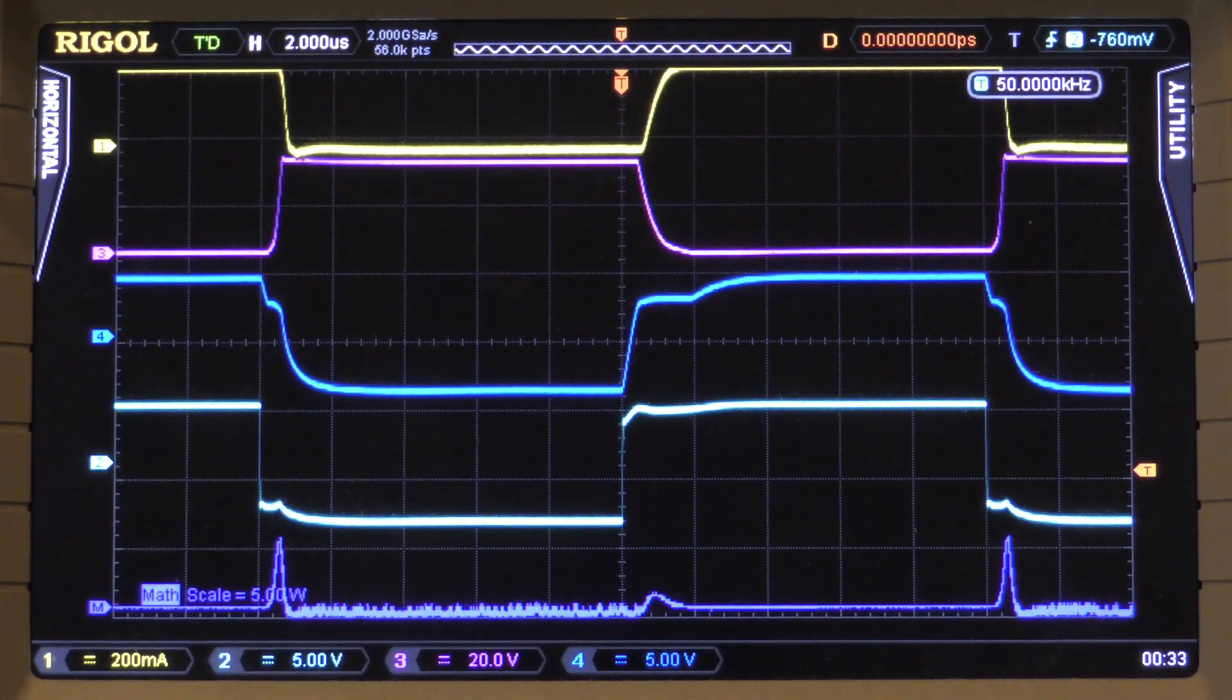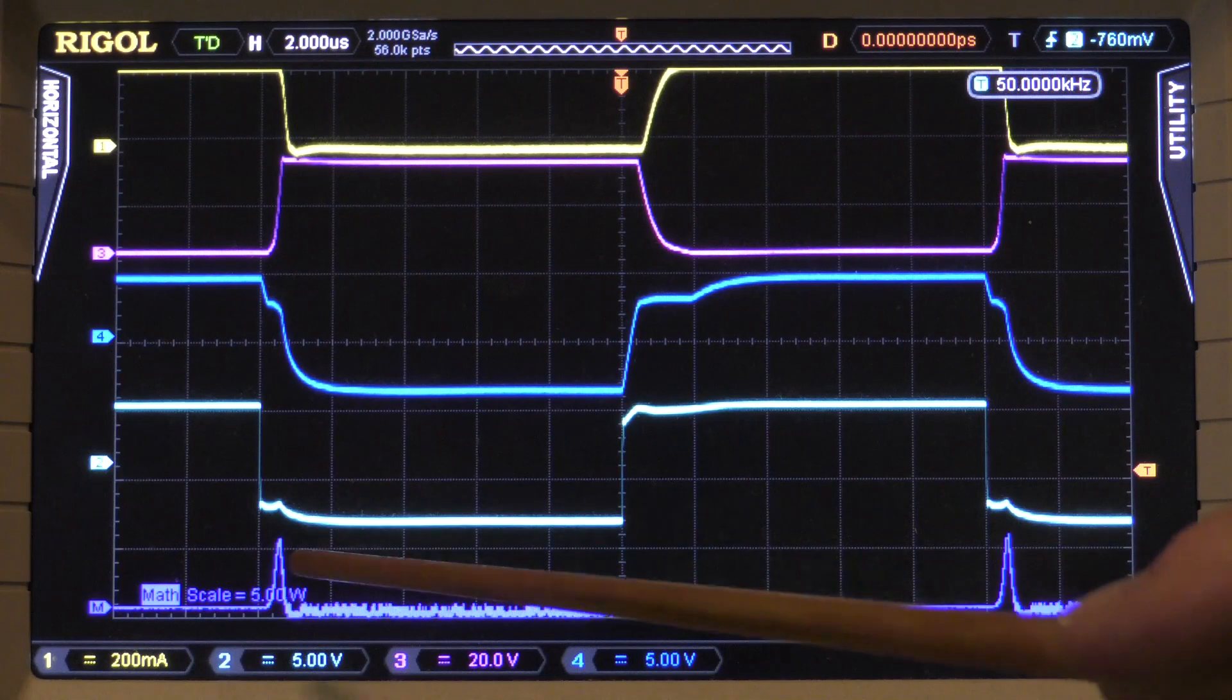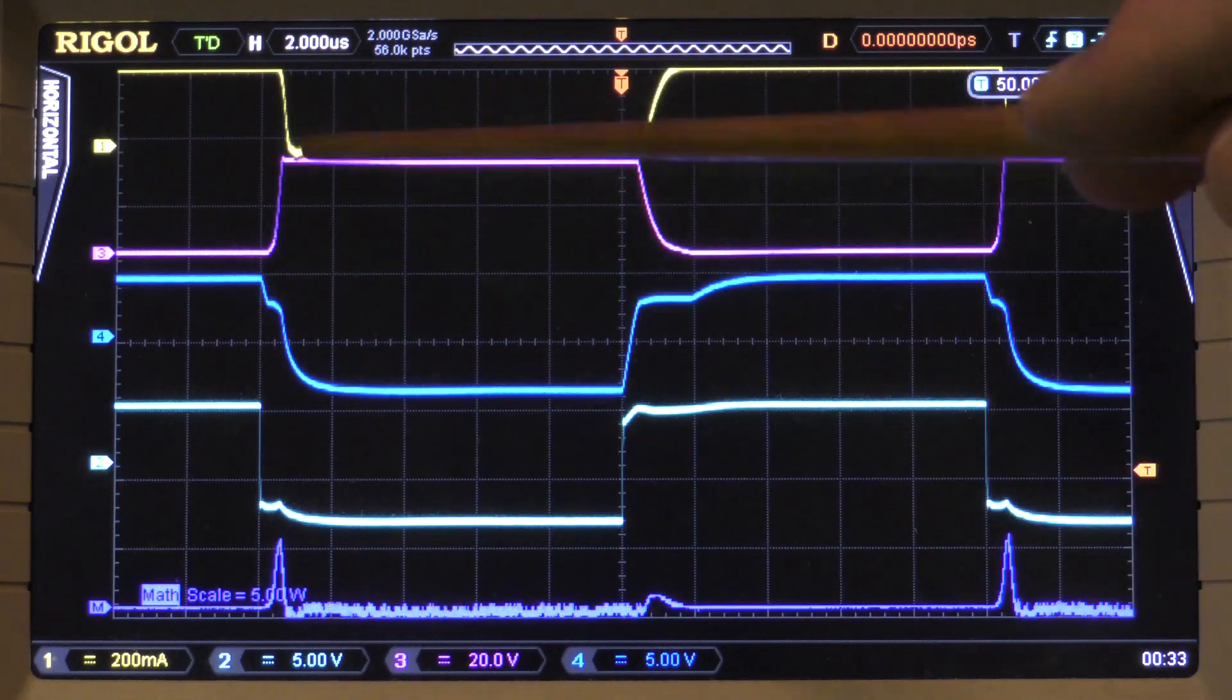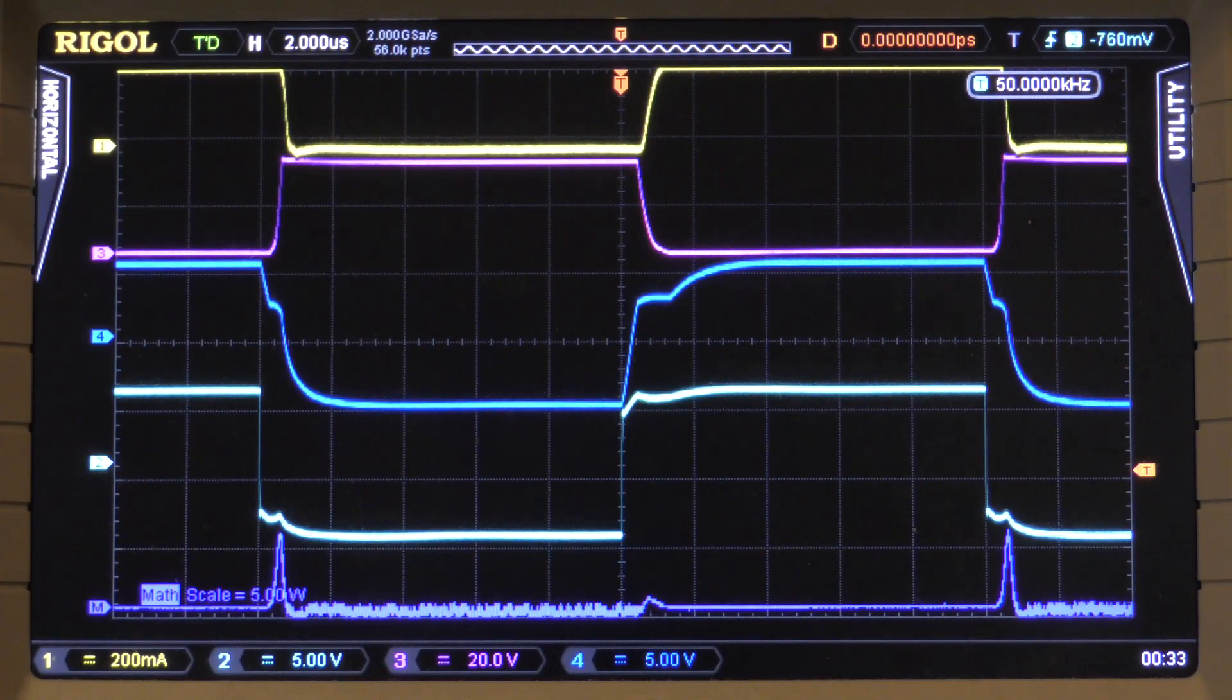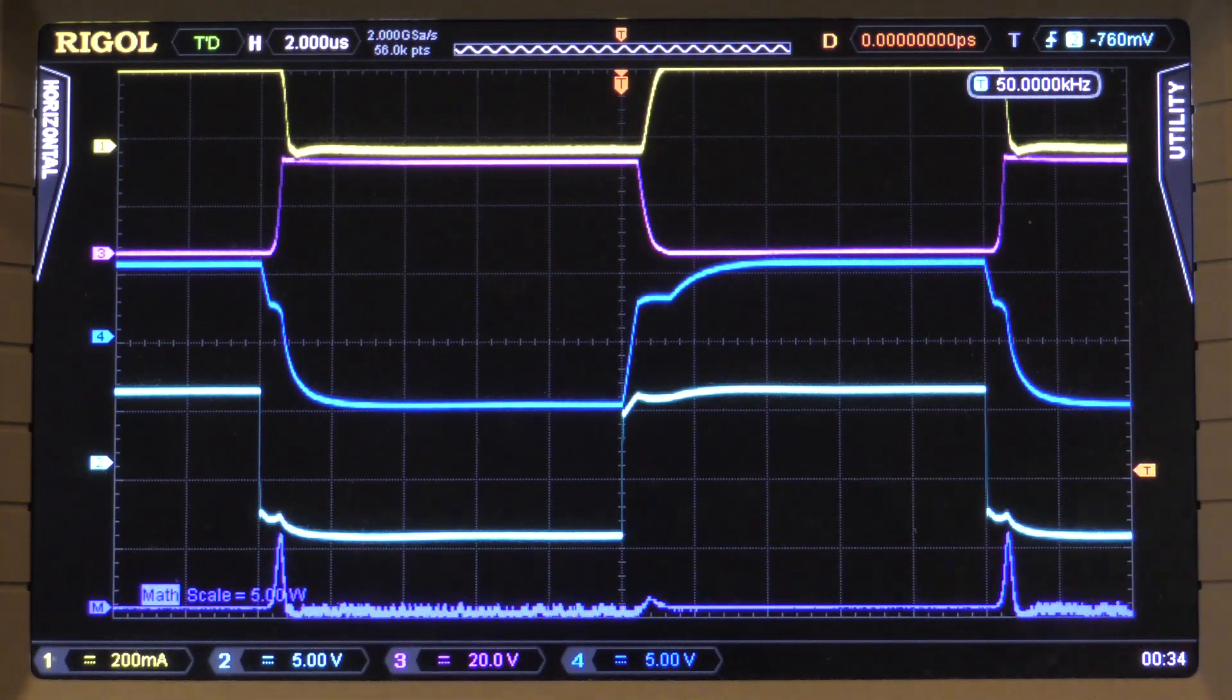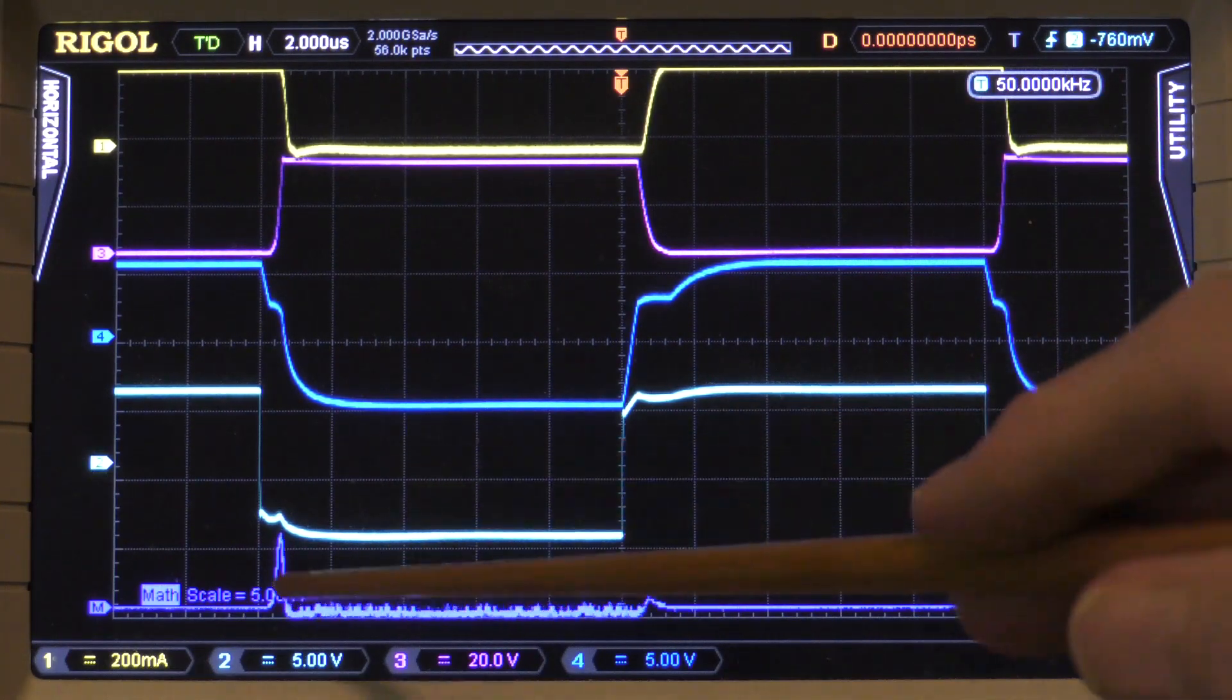And you notice that when we get to 4 volts, something starts to happen to this gate voltage. Instead of the continuous rise as we had, it seems to plateau here. And that plateau actually has a name—it's called the Miller plateau. And we'll come back to that in just a bit. But notice that we actually increased the turn-off time, or the turn-off power, and we helped the turn-on power a little bit.